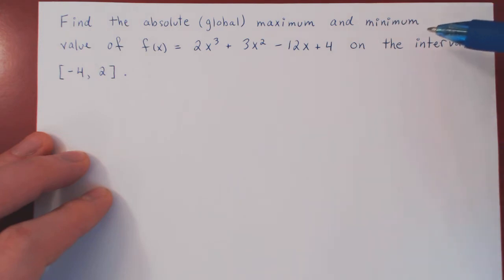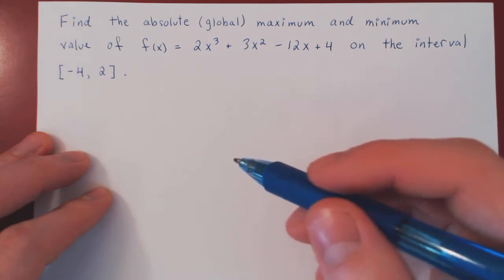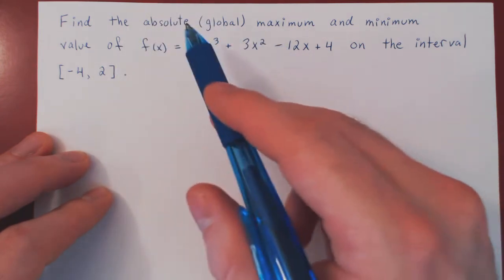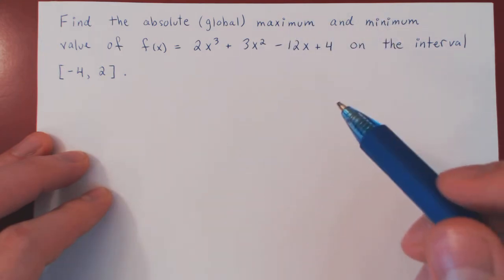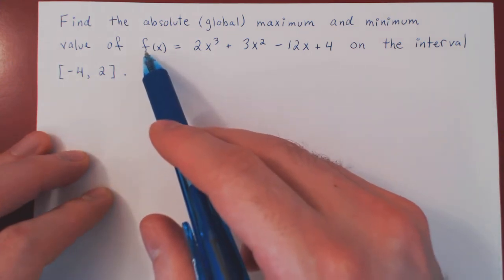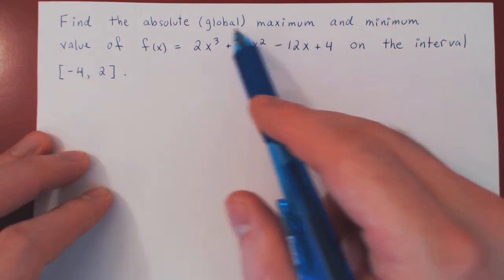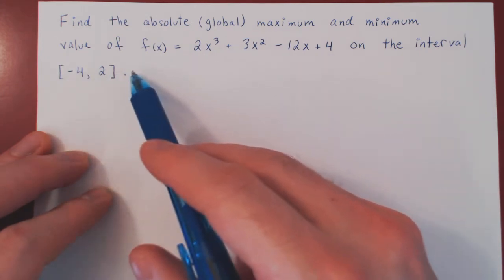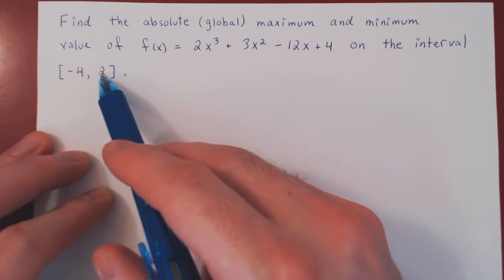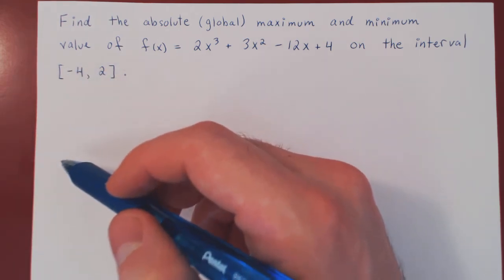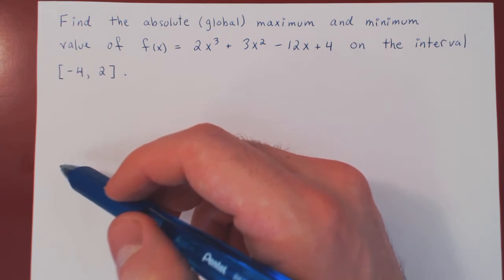Now we know that for some functions over some intervals a maximum and minimum value may not exist. In this case we know that the absolute maximum and minimum do exist because both conditions of the Extreme Value Theorem are satisfied. The function being a polynomial is continuous everywhere, and our interval is closed and bounded — it is a finite interval from negative 4 to 2, and as negative 4 and 2 are contained in the interval, our interval is closed.